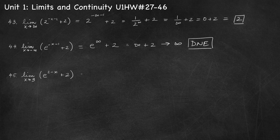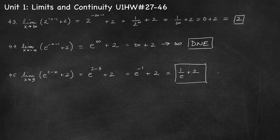Number 45, limit as x approaches 3 of e to the 2 minus x plus 2. Substitution gives e to the 2 minus 3 plus 2, which is e to the negative 1 plus 2, or 1 over e plus 2. That is a finite value, so the limit equals 1 over e plus 2.